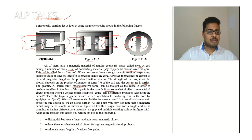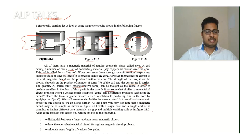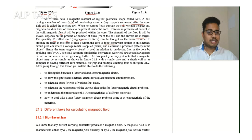This is somewhat similar to an electrical circuit problem where a voltage is applied (cause) and current is produced (effect). Hence the term 'magnetic circuit' is used in relation to producing flux in the core by applying MMF. We shall see more similarities between an electrical circuit and a magnetic circuit as we go along. A magnetic circuit may be as simple as having a single core and single coil, or as complex as having different core materials, air gap, and multiple exciting coils.